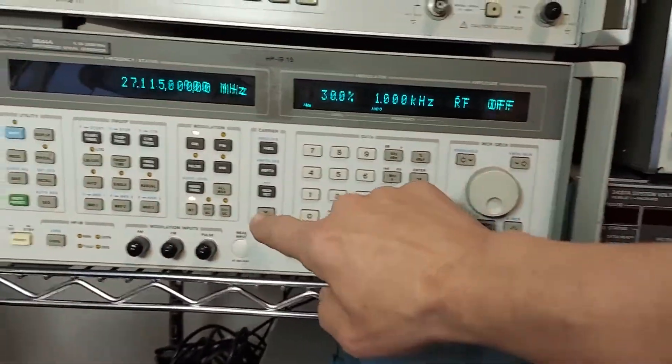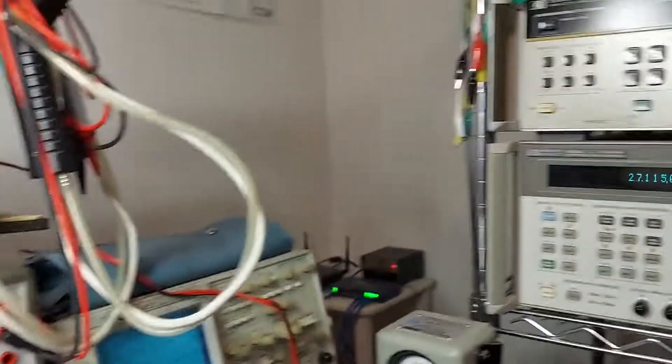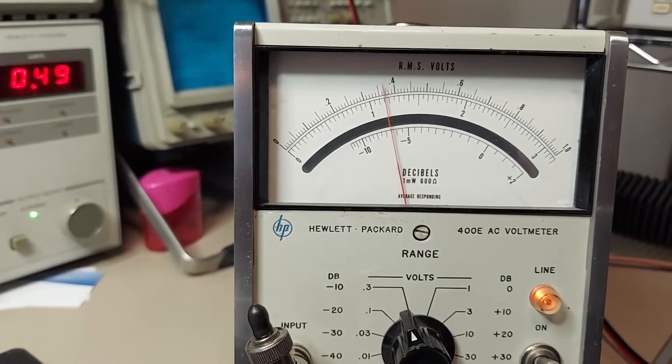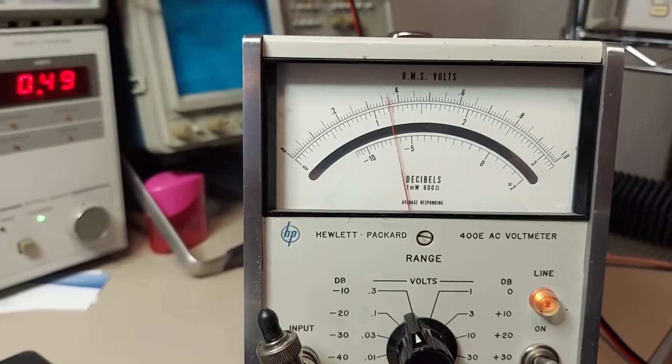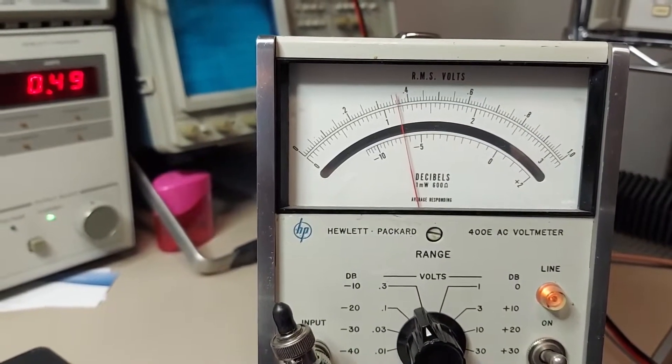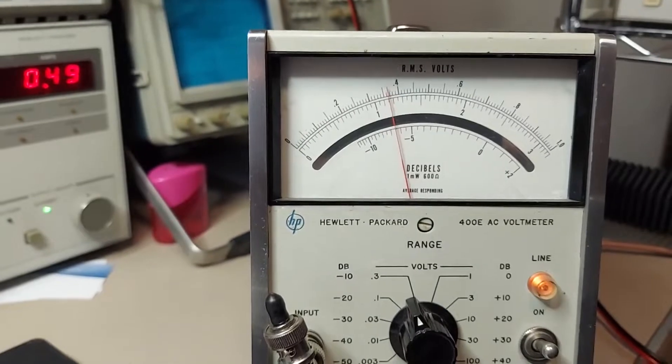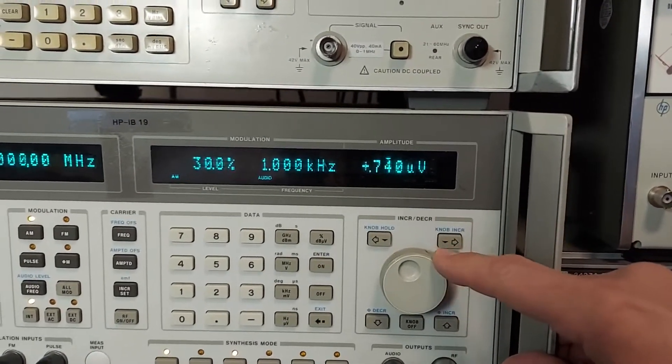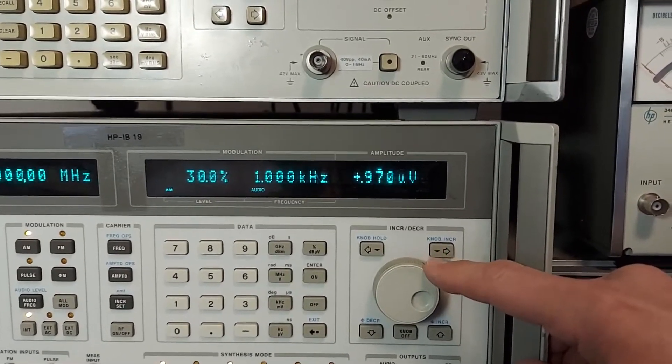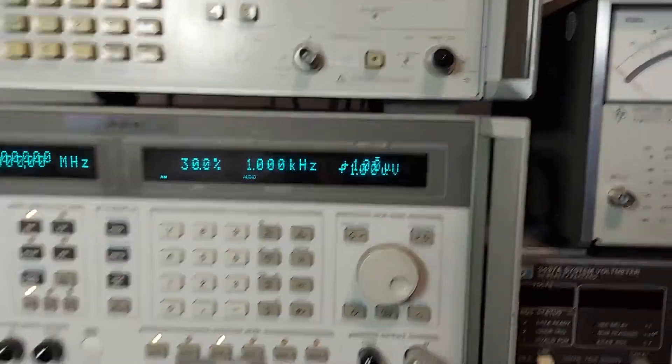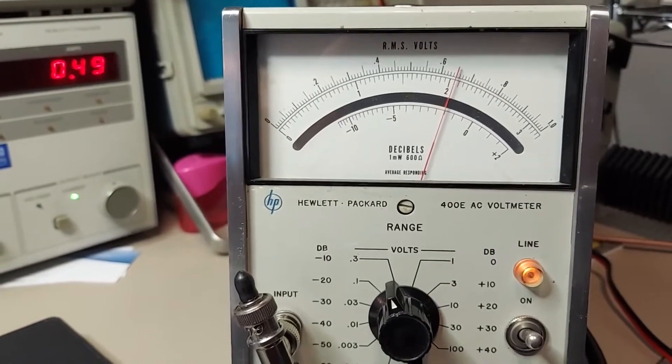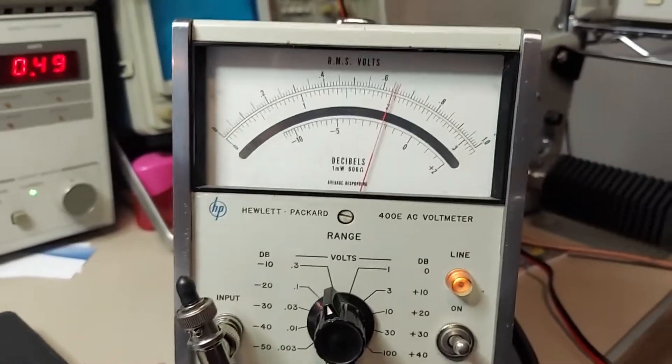So now we will turn the signal generator on and surprise, surprise - it's deaf. We're only about six or seven dB. That's down quite a bit. Now let's turn up the signal here. Let's go to one microvolt and see where we're at. There we have it, one microvolt, and we're still a few dB down, but that's what I kind of expected.